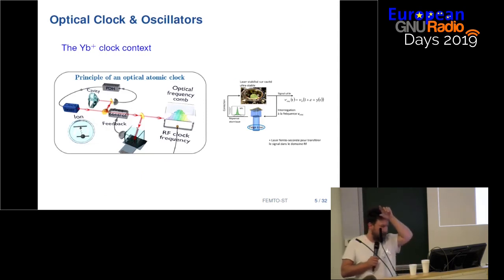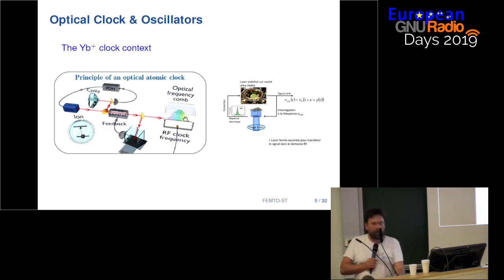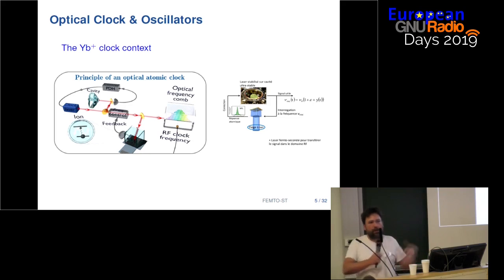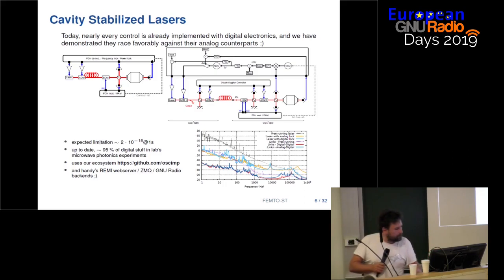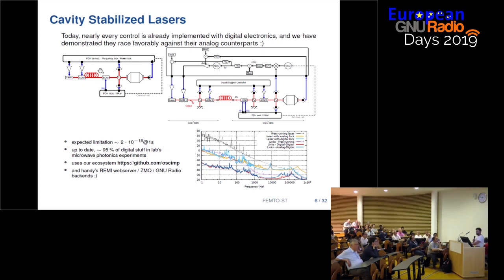Regarding optical clocks and oscillators, we had an insight from Nicola previously, so I'll be fast here. The idea is we have a very stable cavity which acts as a reference, and you need to stabilize a laser onto this cavity so you can interrogate an atom. Once the atom gives its frequency, you can have some kind of control and transfer the clock signal into the RF domain thanks to optical combs. An optical comb is just a super optical synthesizer.